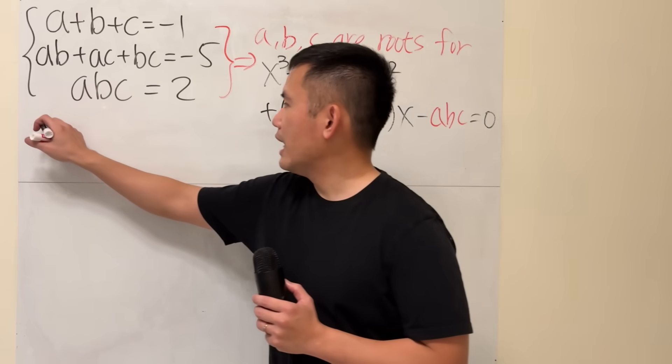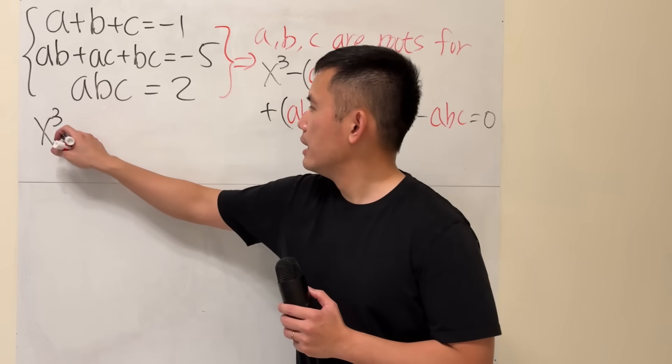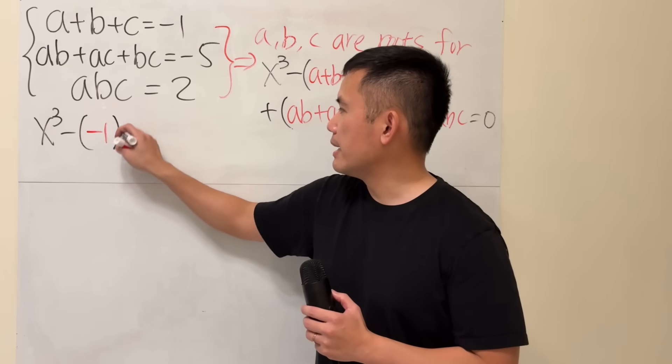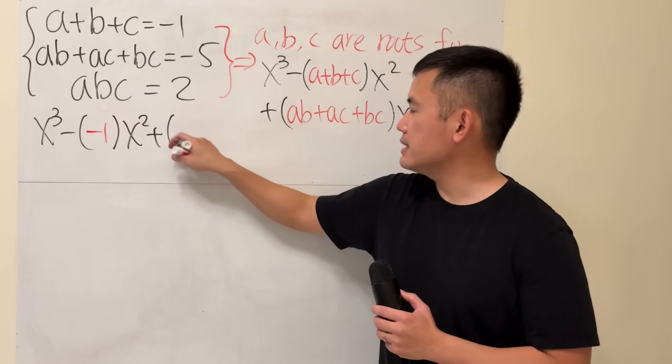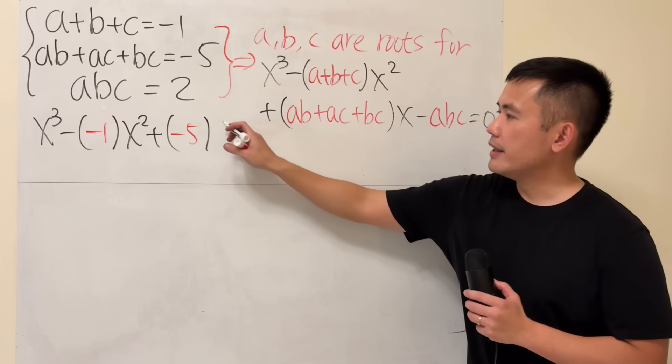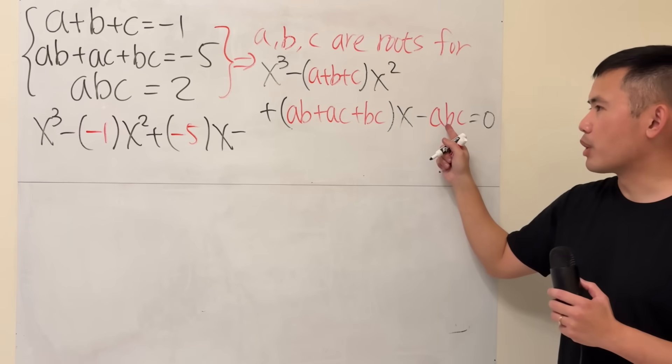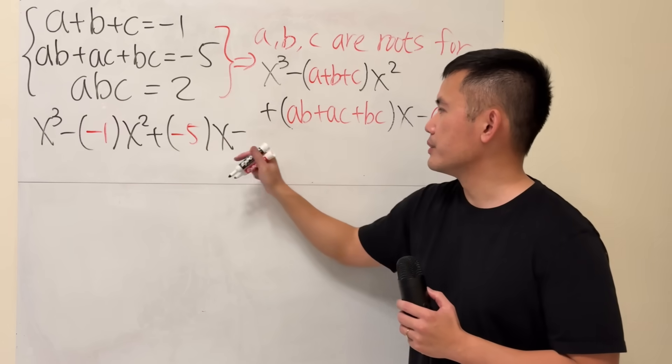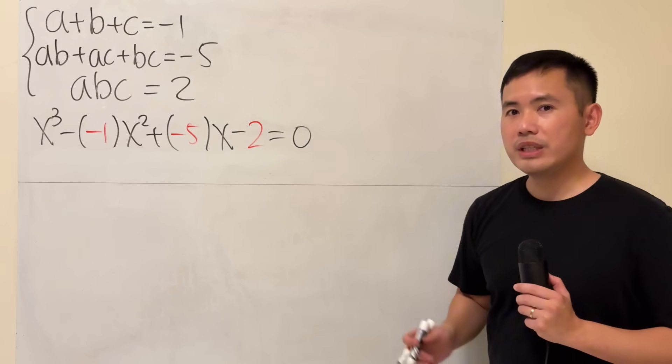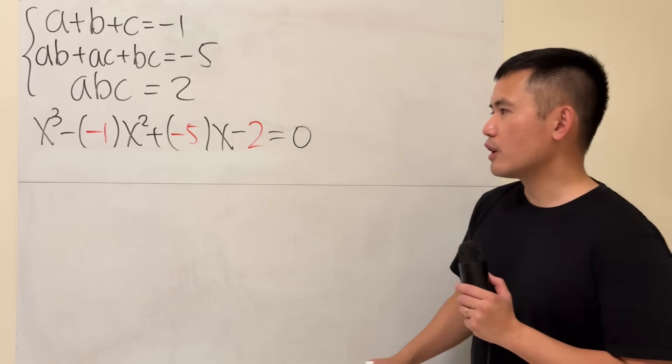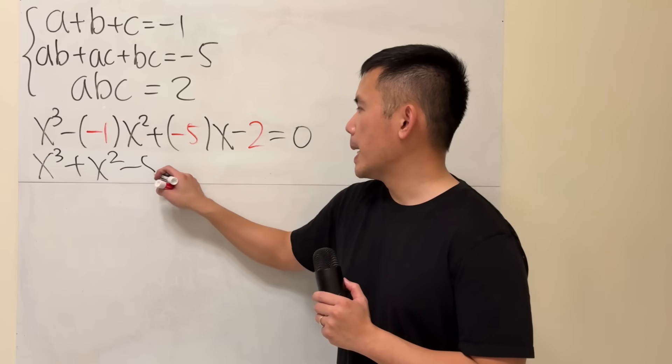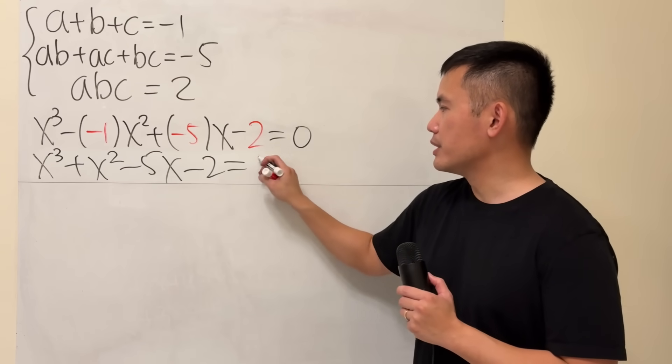First, we will have X cubed, and then minus A plus B plus C, which is equal to negative one, and then times X squared. Continue plus, this is negative five, multiply that with X. And then minus the product of ABC, which is two. And all that is equal to zero. So thanks to Vieta's formula, we just have to solve this cubic equation, which is the same as X cubed plus X squared minus 5X minus 2 is equal to zero.